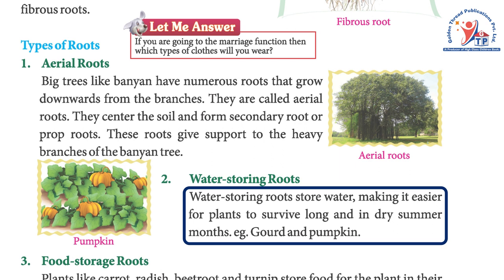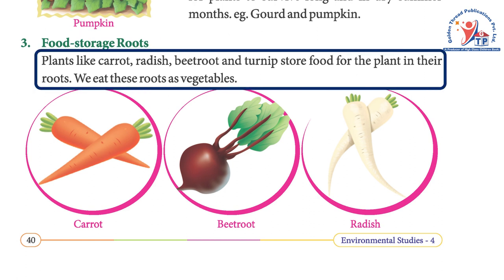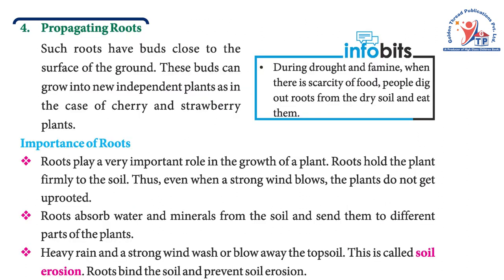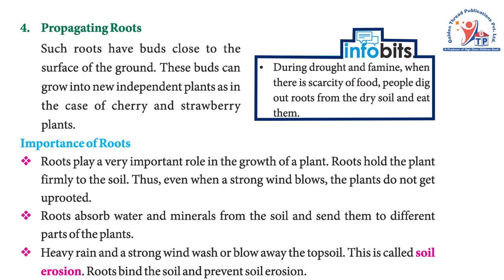Water-storing roots store water, making it easier for plants to survive long dry summer months — for example, goat and pumpkin plants. Food-storage roots: plants like carrot, radish, beetroot, and turnip store food in their roots, which we eat as vegetables. Propagating roots have buds close to the surface of the ground; these buds can grow into new independent plants, as in cherry and strawberry plants.